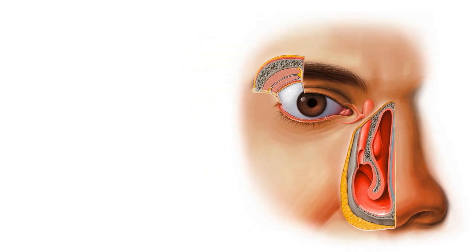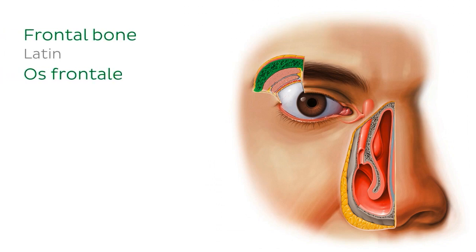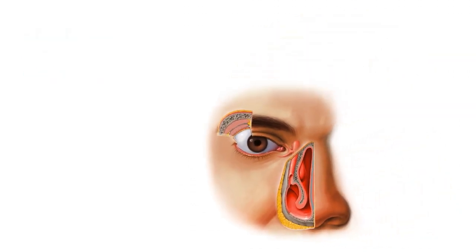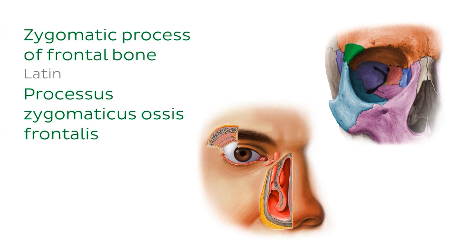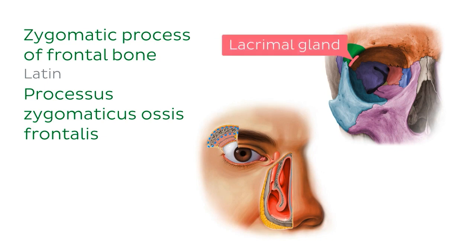Looking in the supralateral aspect we can now see a bone highlighted in green. This is part of the frontal bone, which has been resected slightly to see the underlying structures. Peeling off the skin and muscles, the image on the right shows more of the frontal bone in orange. The section highlighted in green is the zygomatic process of the frontal bone, corresponding to the resected section on the left. Tucked behind here is where we'll find the lacrimal gland, which we'll identify shortly.